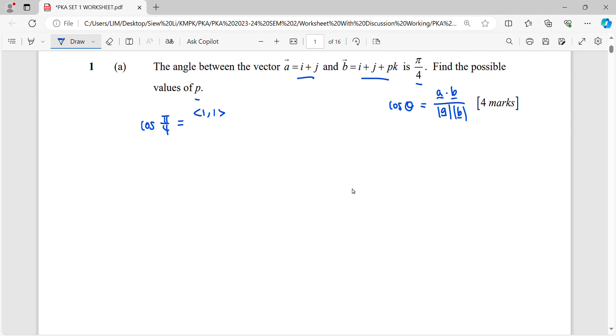1, 1, p. So this is three dimensions, means that your vector for a is 1, 1, 0.